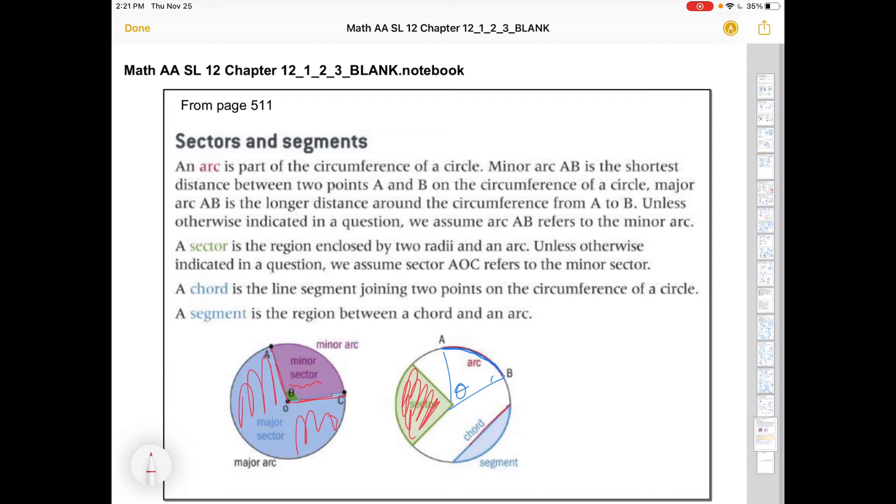A chord is just a line that goes from one point on the circle to another, and a segment is the little area that's created here. Sometimes the IB will ask you to find some of those segment areas, which involves both triangle trigonometry and some of the sector area stuff.